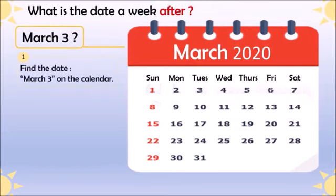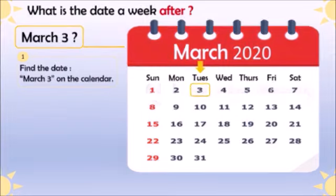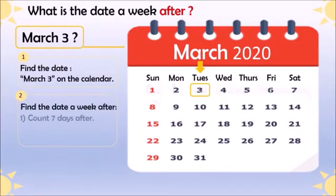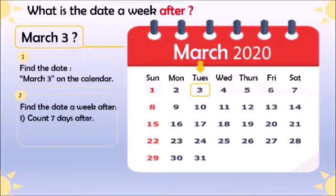The first step is that we should find the date March 3 on the calendar — yes, here it is. Now the second step is to find the date a week after, and we can do it in two ways.